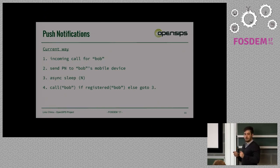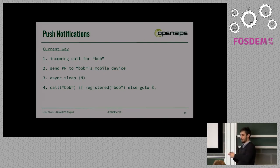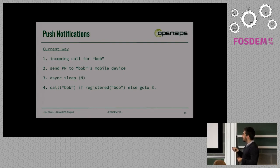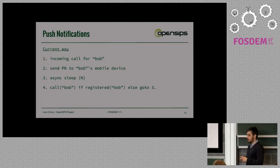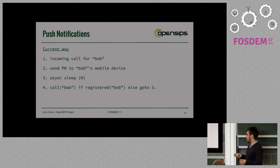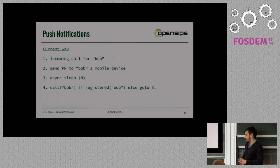But this is a bit deceiving. This was one of those scenarios you don't even consider, because you'd have to be a genius to foresee everything. So you do it like this: call arrives, we send the push notification, and then we do this sort of feedback loop where we asynchronously sleep and just do this poll — if he's registered, if he's not registered yet, sleep some more. This is sort of a hackish way to do it, but it apparently works.